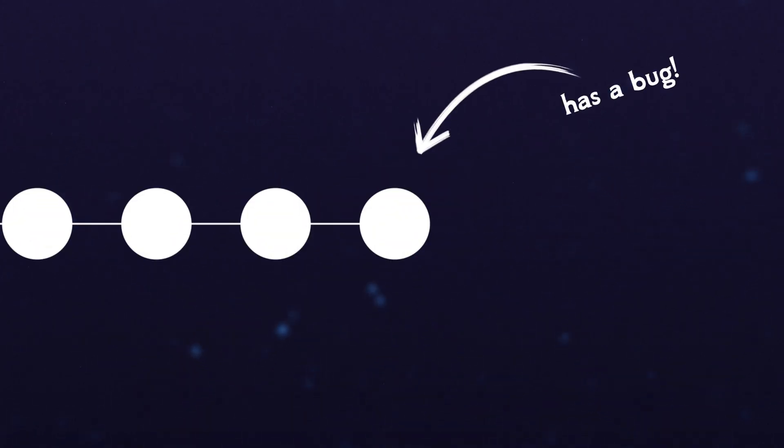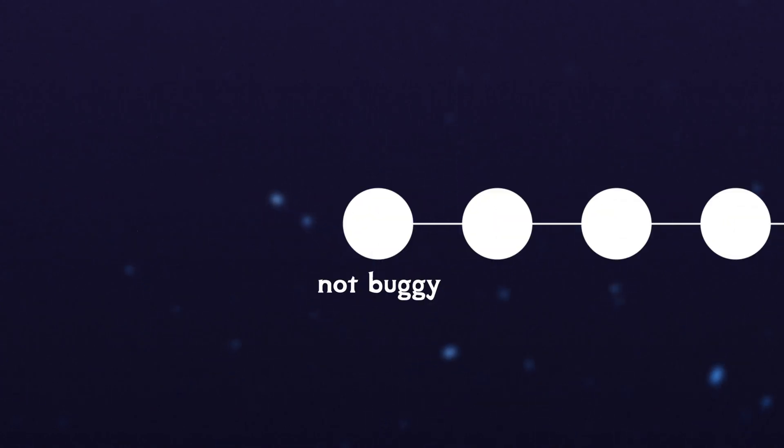Let's pretend that we have a branch that has many commits on it. Our latest commit contains a bug and 100 commits ago does not contain the bug. How are you to find when the bug was introduced? You could go step by step through it until you find where the bug is, but that would be tedious — it could take all afternoon or multiple days.